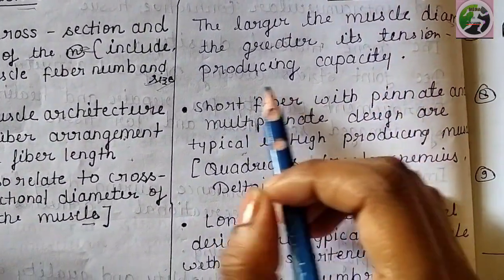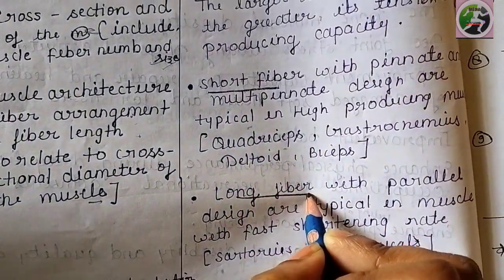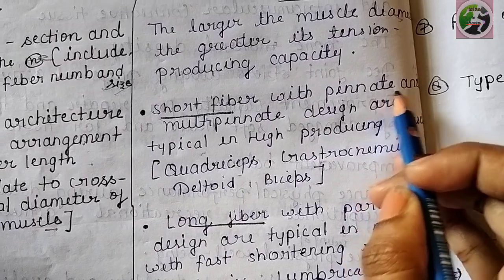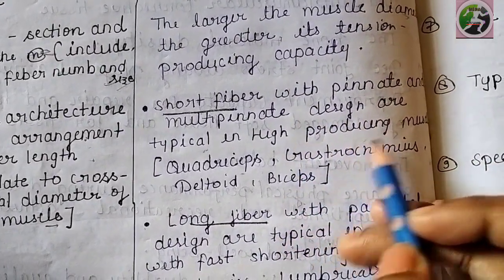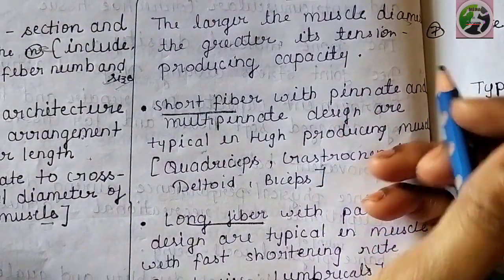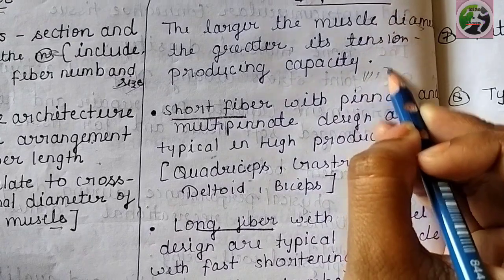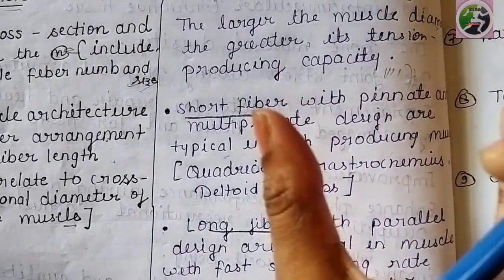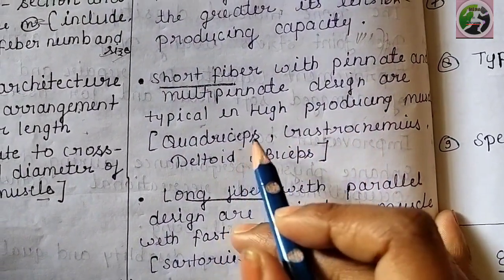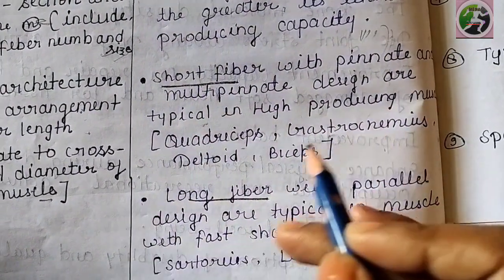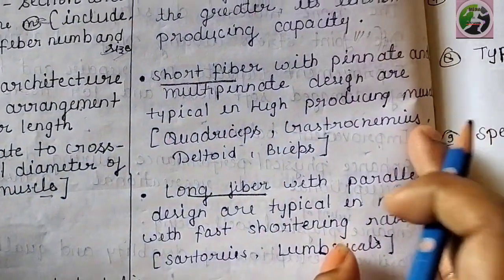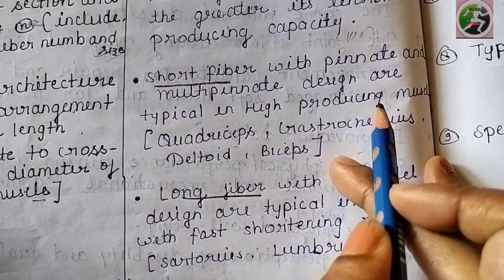Next is muscle fiber arrangement and fiber length. There are short fiber and long fiber arrangements. Short fiber arrangements are called pennate and multipennate designs, which are high force-producing muscles. Examples include pennate and multipennate muscles such as the gastrocnemius — these are short fiber, high force-producing muscles.